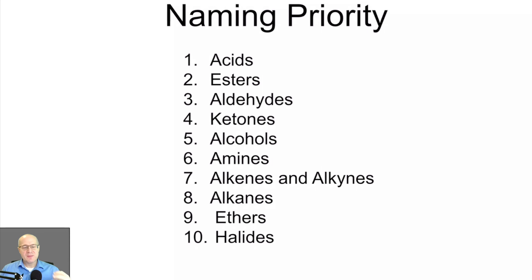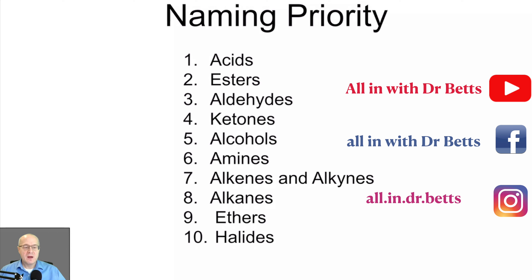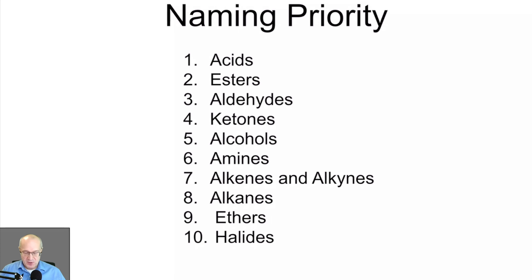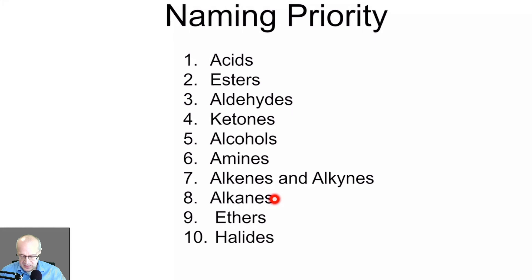Before we get too deep into naming, we need to talk about priority — what class of compounds takes priority over others. When you're naming a compound that has multiple classes, you have to know which ones to name first. For example, carboxylic acids are named with the suffix -oic acid, like ethanoic acid or methanoic acid, and acids take priority over all other groups. Alcohols take priority over amines, alkenes and alkynes, alkanes and halides.